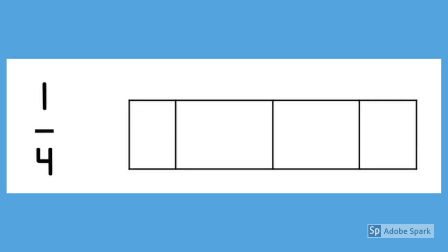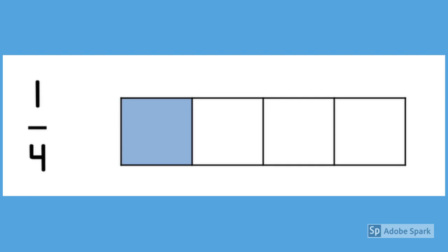So here we're using a bar model to represent one-quarter. Take a closer look at my bar model. What have I done wrong? That's correct. My bar model wasn't split into 4 equal parts. Here I have shaded in one of the parts to represent one-quarter. You don't have to shade in the first part. It could be the second part, the third part, or the fourth part. But I'm going to keep it the first part.